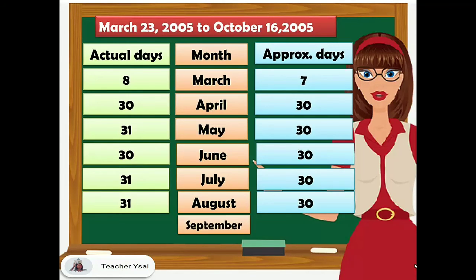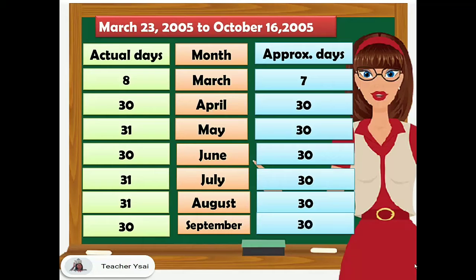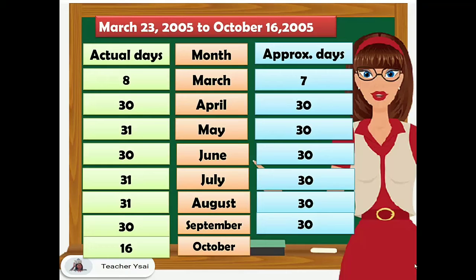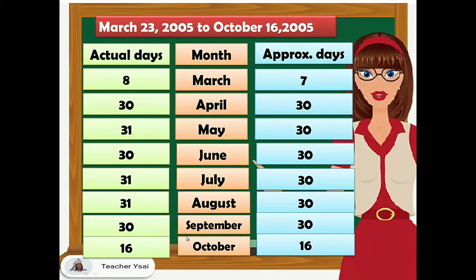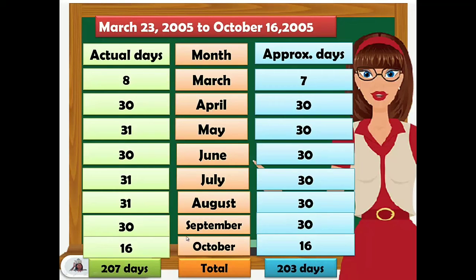For the month of September, we have 30 days and for the approximate days, we have 30. For the month of October, we have 16 days, both for the actual and approximate days. So if we're going to add these numbers, we'll have the actual number of days equal to 207 and the approximate days equal to 203.